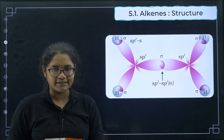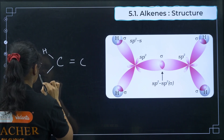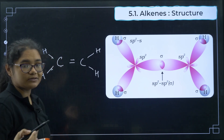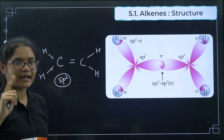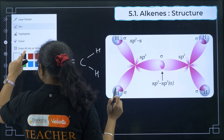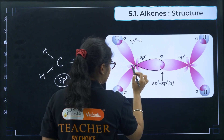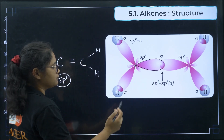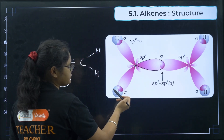Coming to the structure of alkenes: in C2H4, each carbon has 3 sigma bonds, so the hybridization is sp2. In sp2, there are 3 hybrid orbitals. These 3 sp2 hybrid orbitals form 3 sigma bonds — one sigma bond with the other carbon, and one each with two hydrogen atoms.